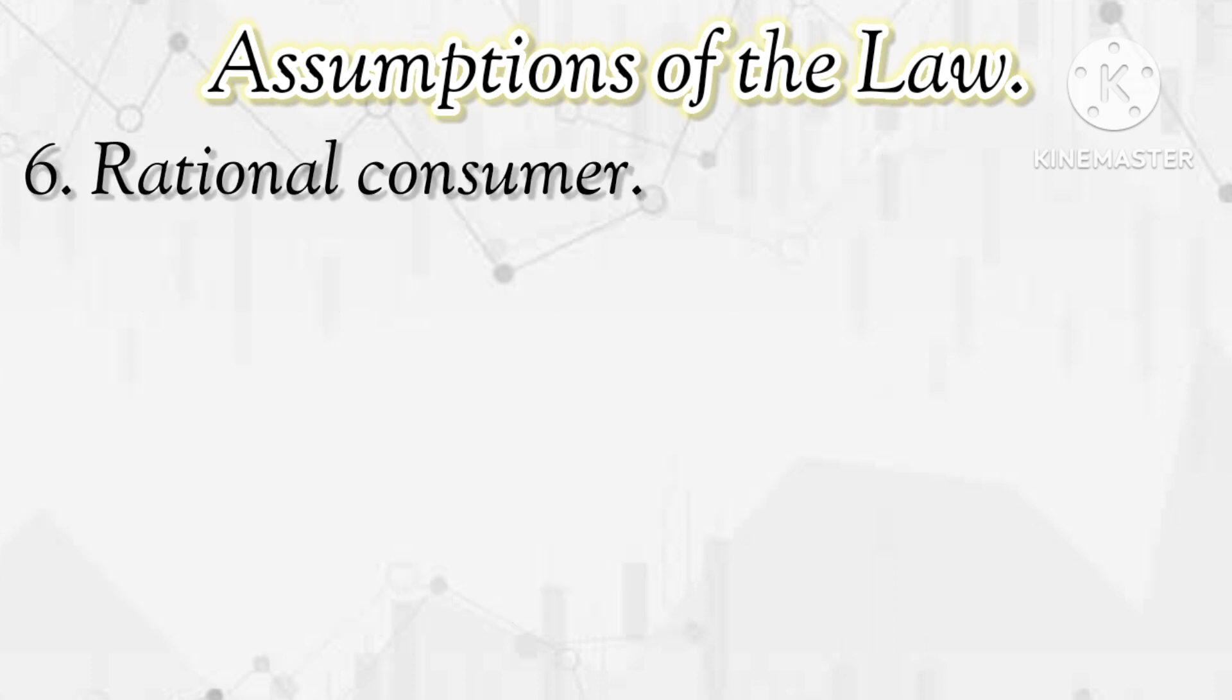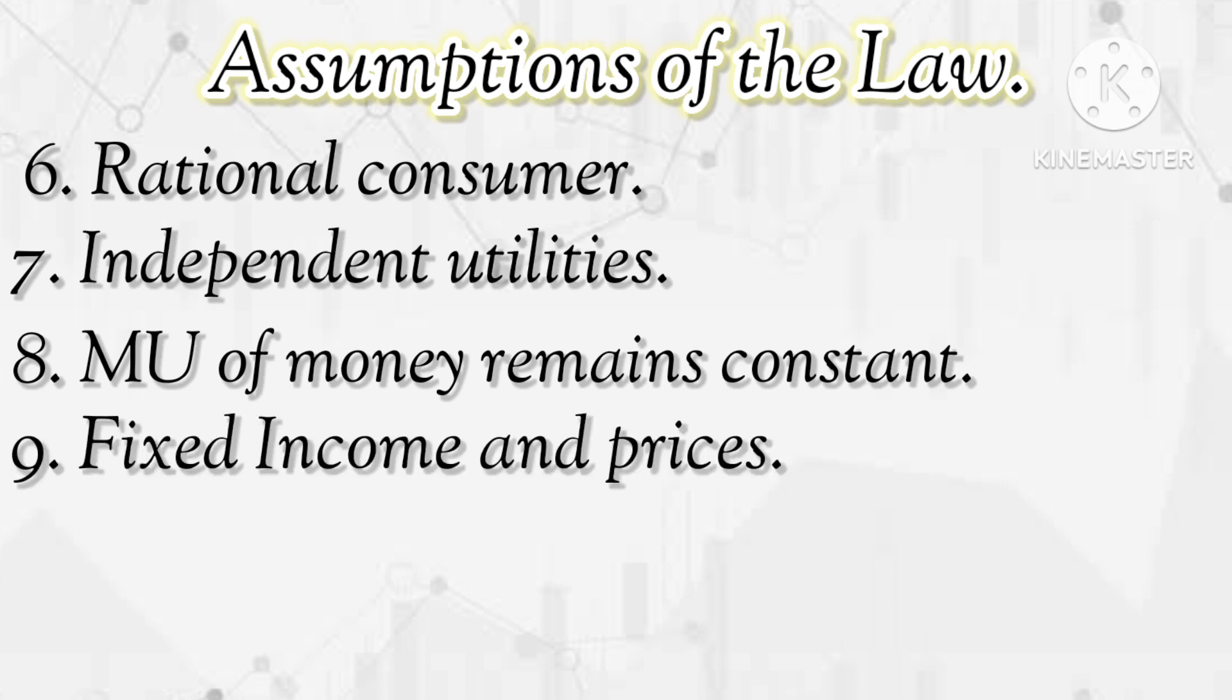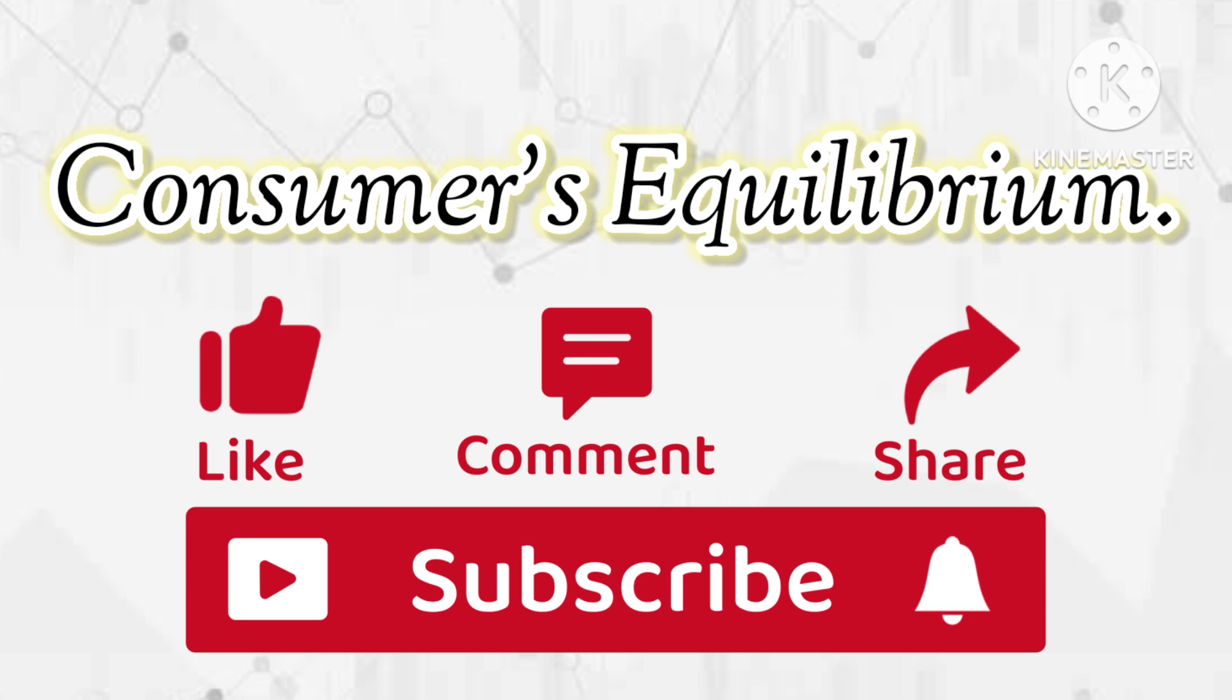Number six, rational consumer. That means who measures, calculates and compares the utilities of different commodities. Number seven, independent utilities. Number eight, marginal utility of money remains constant. Number nine, fixed income and prices. And number 10, perfect knowledge.